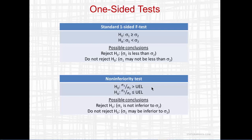In the non-inferiority test, the null hypothesis is that the ratio of the standard deviations is greater than some upper equivalence limit. The alternative is that the ratio is less than or equal to the upper equivalence limit. Possible conclusions of the non-inferiority test are either to reject H0, in which case sigma 1 may not be inferior to sigma 2, or do not reject H0, in which case sigma 1 may be inferior to sigma 2.